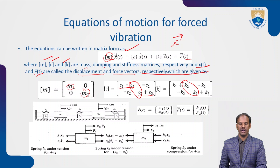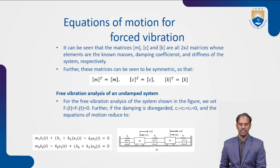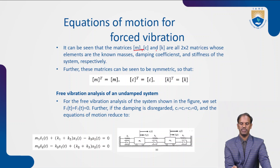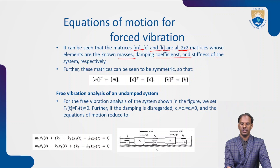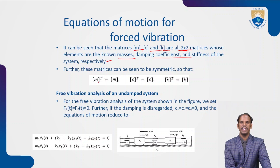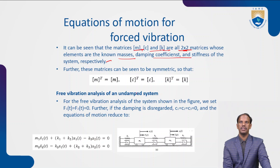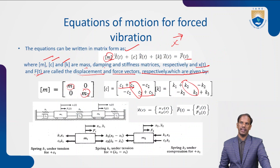The equation of motion can be written in matrix form using 2×2 matrices for mass, damping, and stiffness coefficients respectively. The matrices can also be written in transpose form [M]ᵀ, [C]ᵀ, [K]ᵀ — the same equation of motion applies. This gives the complete generalized matrix representation of the two degrees of freedom system.